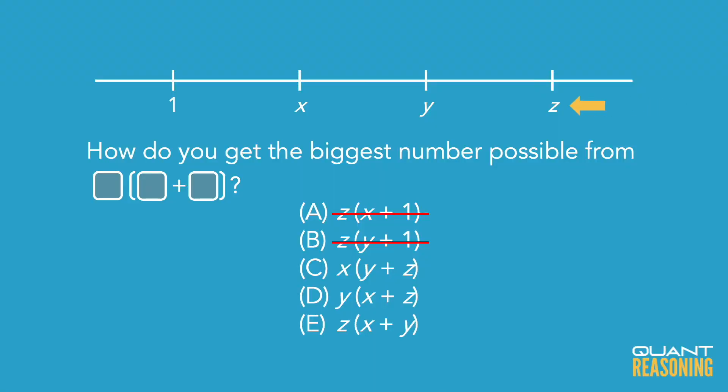As we think about a strategy to win this game, do you feel intuitively that you'd be better off keeping the biggest number for the multiplication part — adding the two smaller numbers and then multiplying that sum by the biggest number? If so, you're right. When you multiply the biggest number by the sum of the two smaller numbers, you essentially get to use the value of that biggest number twice. Each of the smaller numbers in the sum gets multiplied by that bigger number, whereas if you waste the bigger number inside the sum, you're only getting the value out of it once.